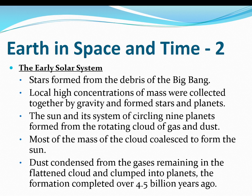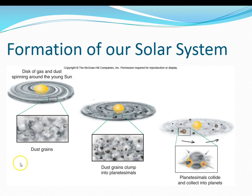From the material that was exploded during the Big Bang, stars formed. Then concentrations of mass were collected together due to gravity and planets formed. Our solar system — the Sun and our eight planets — formed from a rotating cloud of dust and gases, and most of the mass ended up being in the Sun. Dust condensed from the gases remaining in the flattened cloud and clumped eventually into planets, and that was finished by about 4.5 billion years ago.